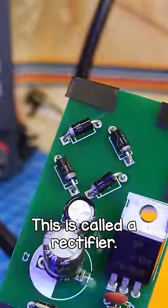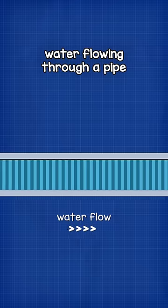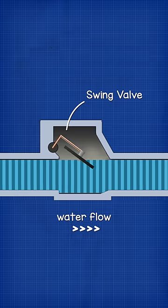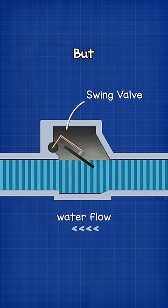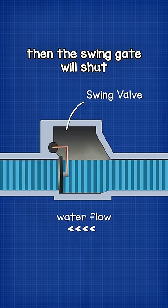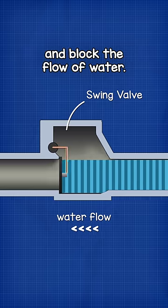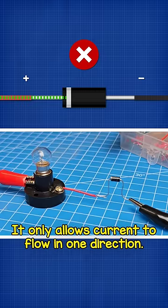This is called a rectifier. Imagine water flowing through a pipe that has a swing valve installed. As water flows, it opens the swing valve, but if the water changes direction, the swing gate shuts and blocks the flow. That's exactly what the diode does to electricity — it only allows current to flow in one direction.